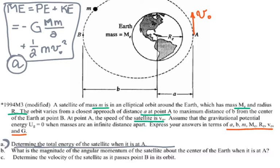For part B, find the magnitude of the angular momentum of the satellite about the center of the Earth when it is at point A, and also when it is at point B.